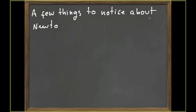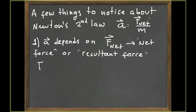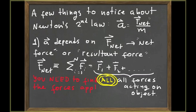Now here are a few things to notice about Newton's second law: a equals net force divided by mass. First, the acceleration depends on the net force — and 'net' is the key word. Net force, or resultant force, is the vector force you obtain after adding all of the forces acting on the system. It is essential that you find all the forces acting on the system; if you don't consider all of them, the net force will not be correct and your calculations will not be correct.